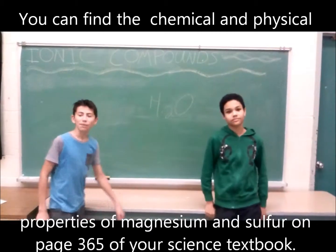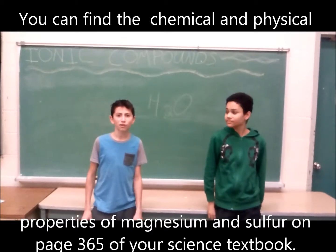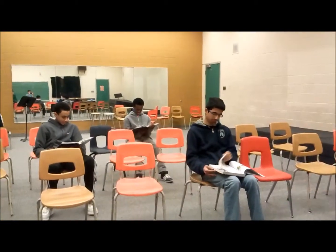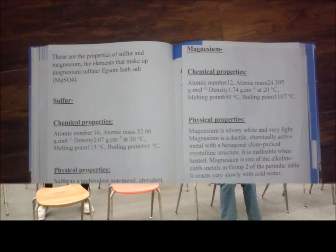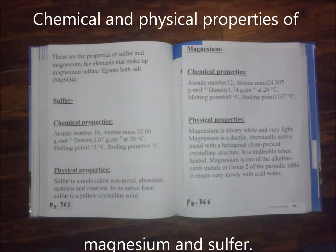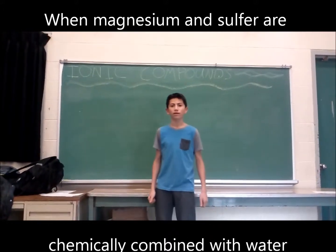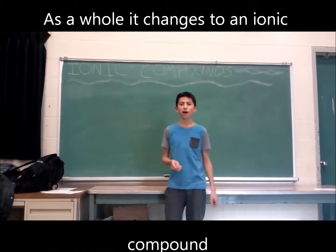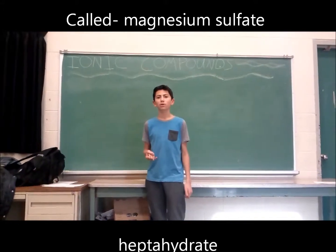You can find the chemical and physical properties of magnesium and sulfur on page 365 in your science textbook. When magnesium and sulfate are chemically combined with water, as a whole, it changes to an ionic compound called magnesium sulfate pentahydrate.